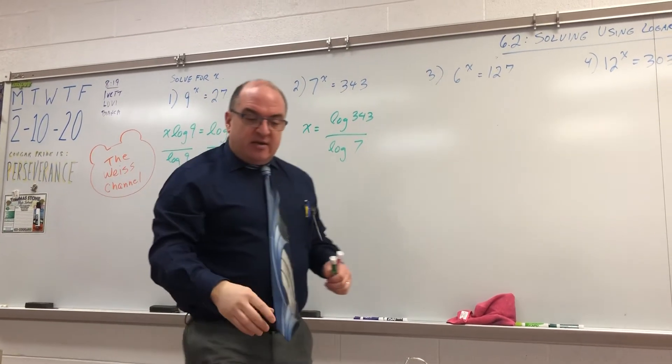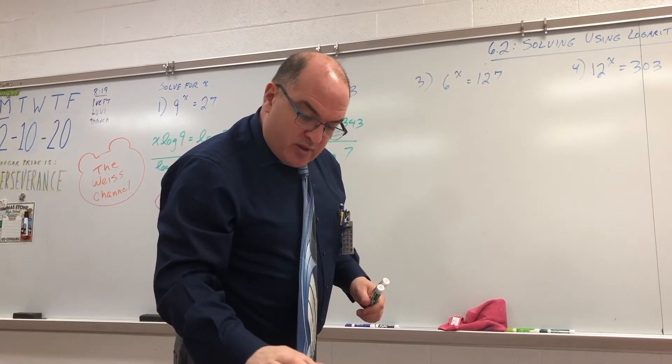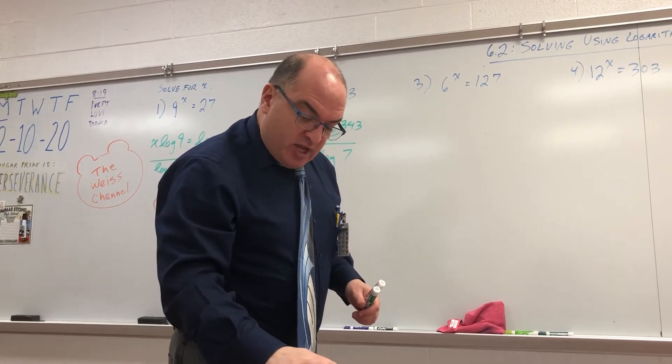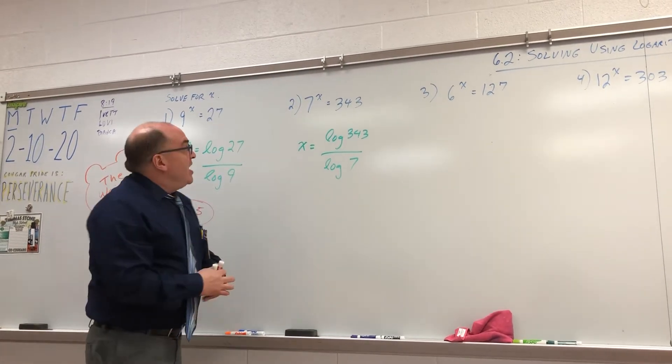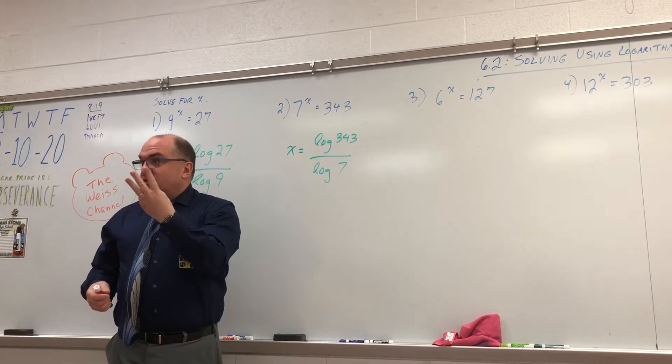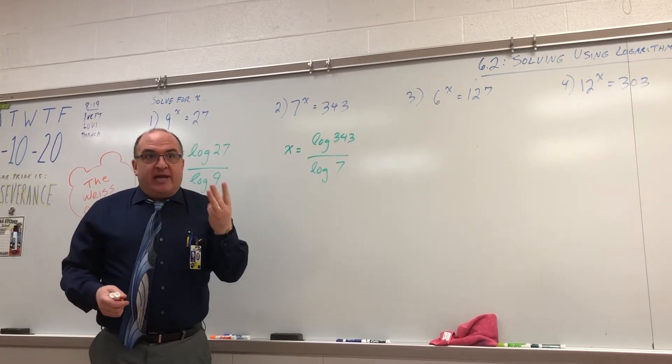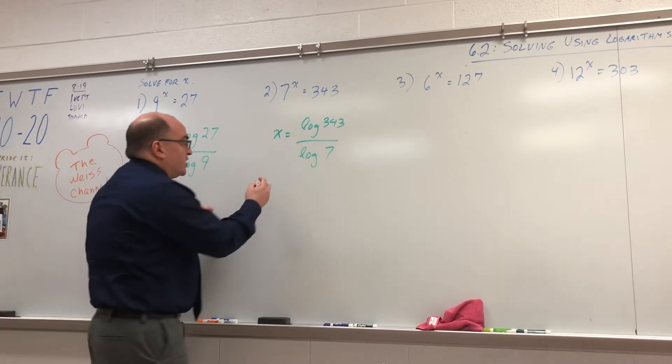If you do that on your calculator, log 343 divided by log 7, you get 3. And does it make sense that 7 times 7 times 7 equals 343?